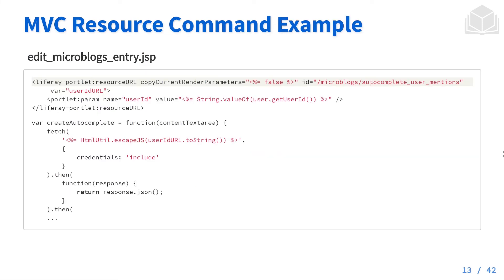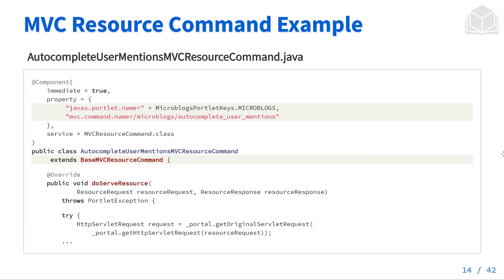Here's an example of a resource command. We have edit_microblogs_entry.jsp, and we're defining our resource URL — in this case /microblogs/autocomplete_user_mentions. Then we create the UserMentionsMVCResourceCommand.java, specifying the portlet it is tied to and the MVC command name as well. In this case, we're going to be extending BasePortletMVCResourceCommand.